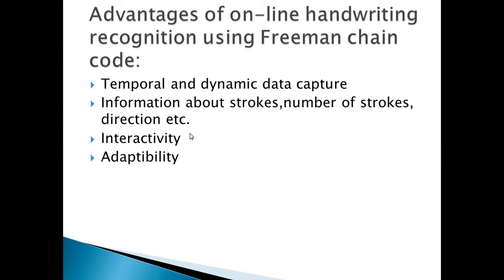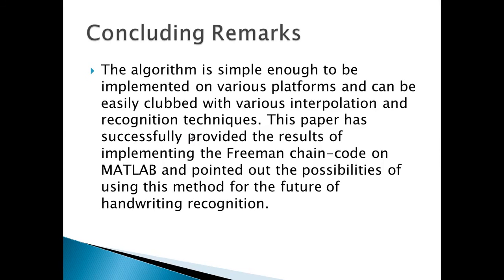Now let us discuss the advantages of online handwriting recognition using Freeman chain coding. This method is extremely dynamic and temporal in terms of data capture. Additionally, it gives information about the strokes, the number of strokes, direction, etc. It is highly interactive and adaptable because when a user sees errors in character recognition, it is considerably easy and fast to alter the stored data regarding the particular character to improve the recognition process. In conclusion, this algorithm is simple enough to be implemented on various platforms and can be easily combined with various interpolation and recognition techniques. The Freeman chain code is definitely the most widely adopted method for online handwriting recognition.